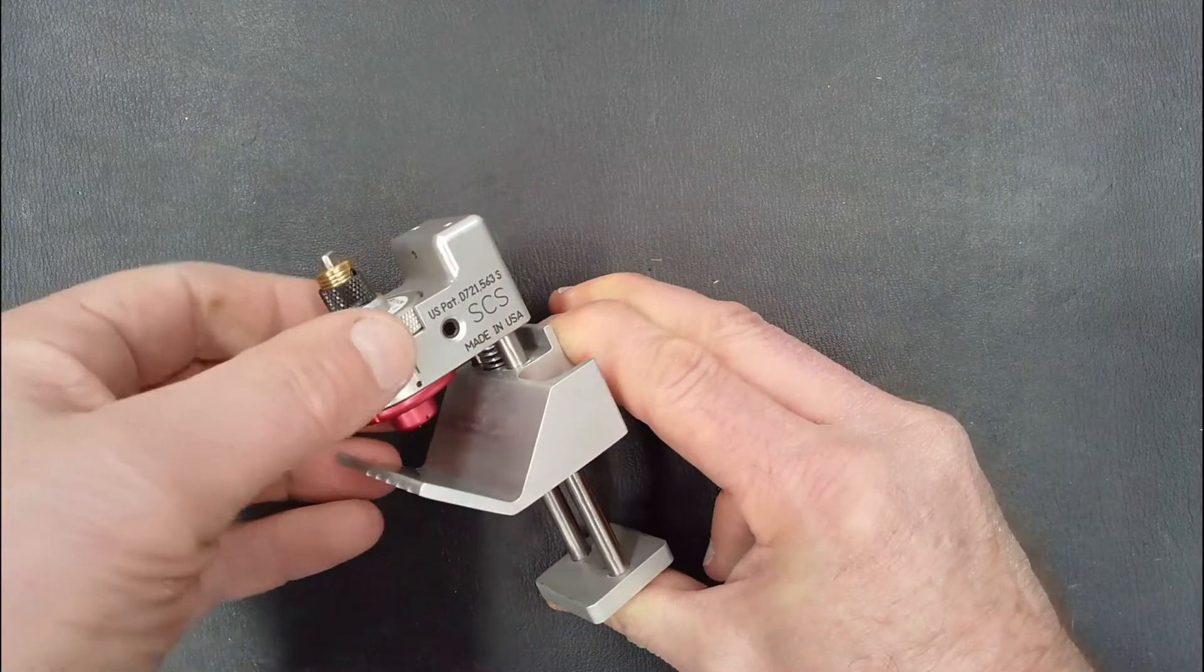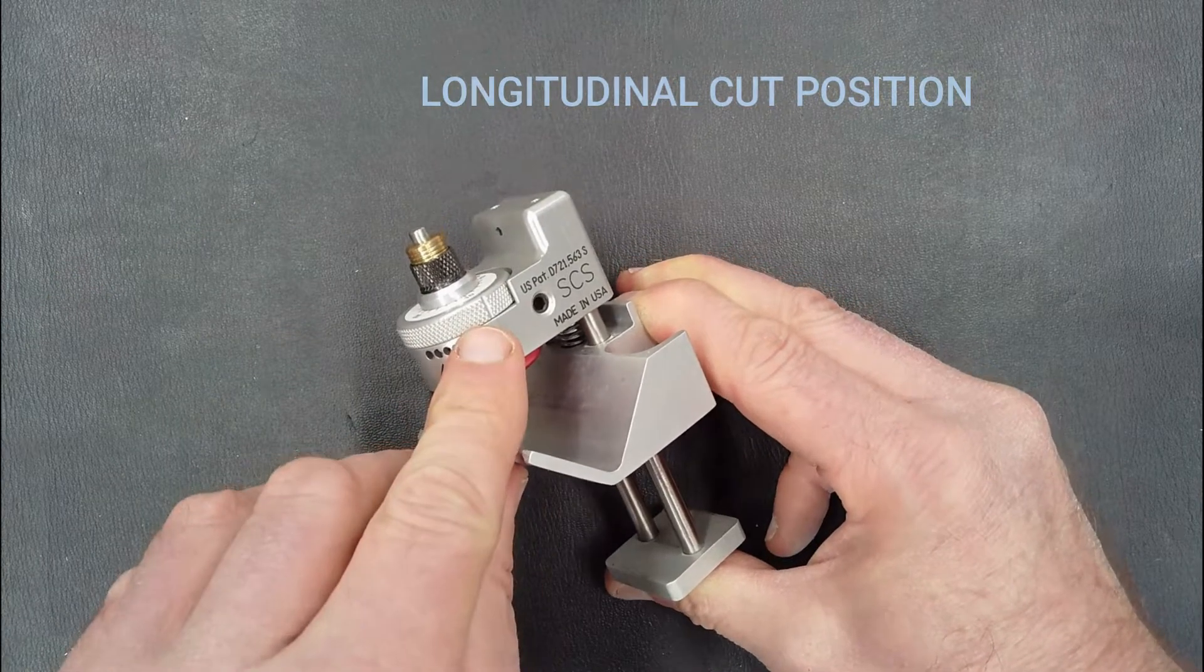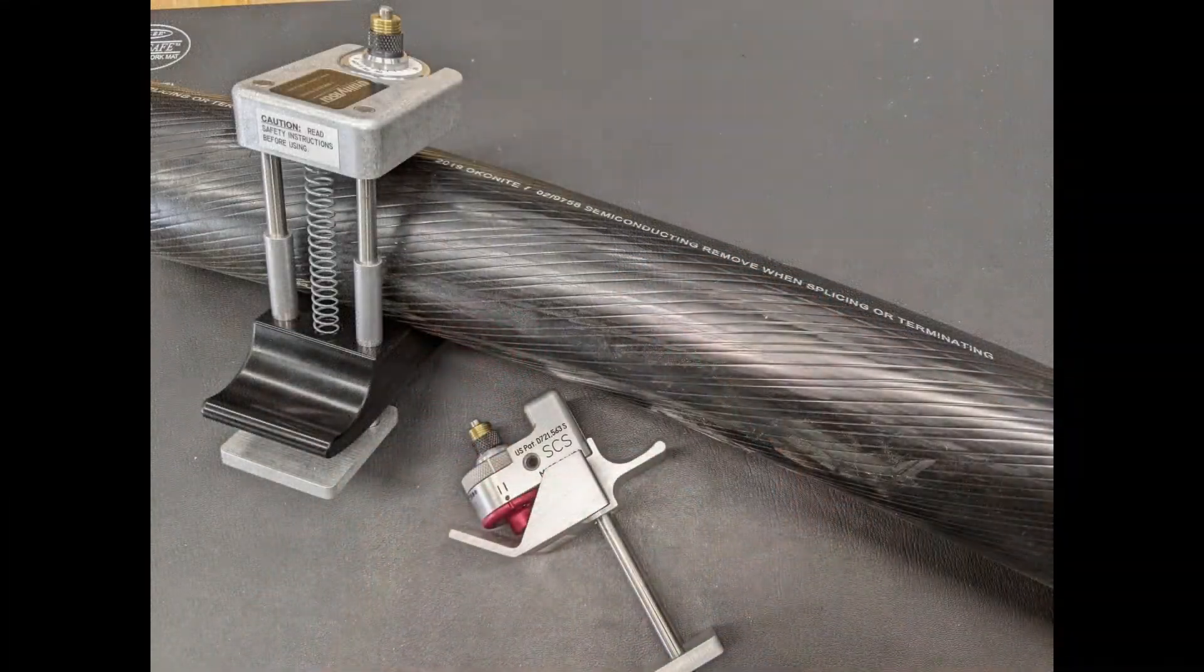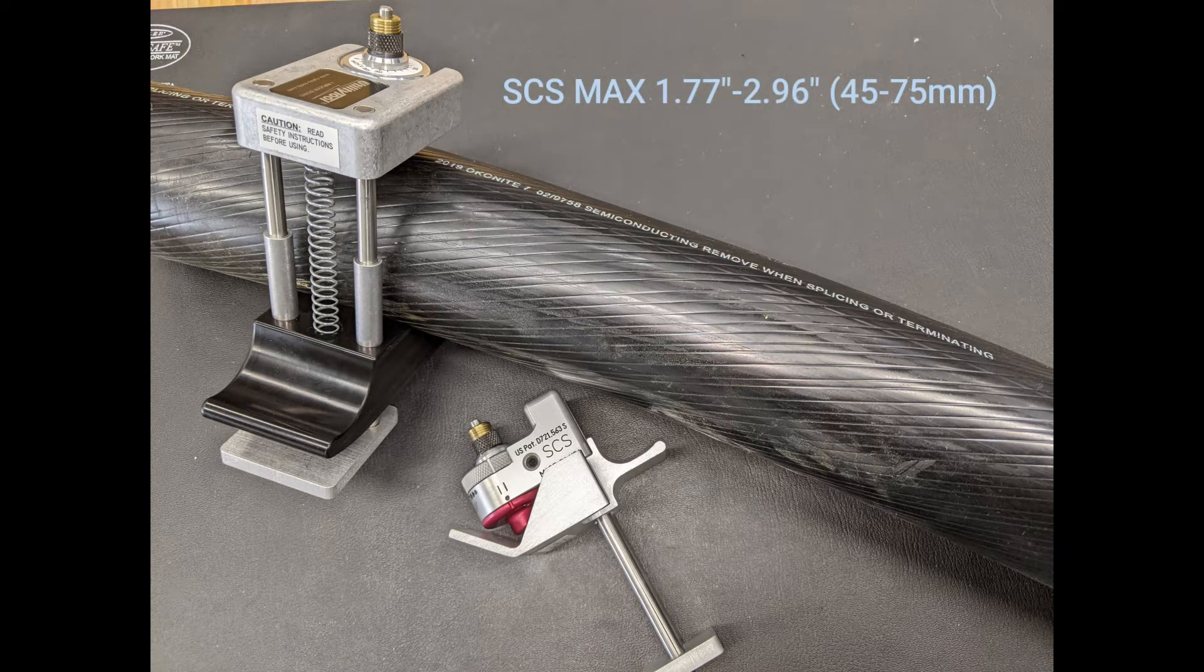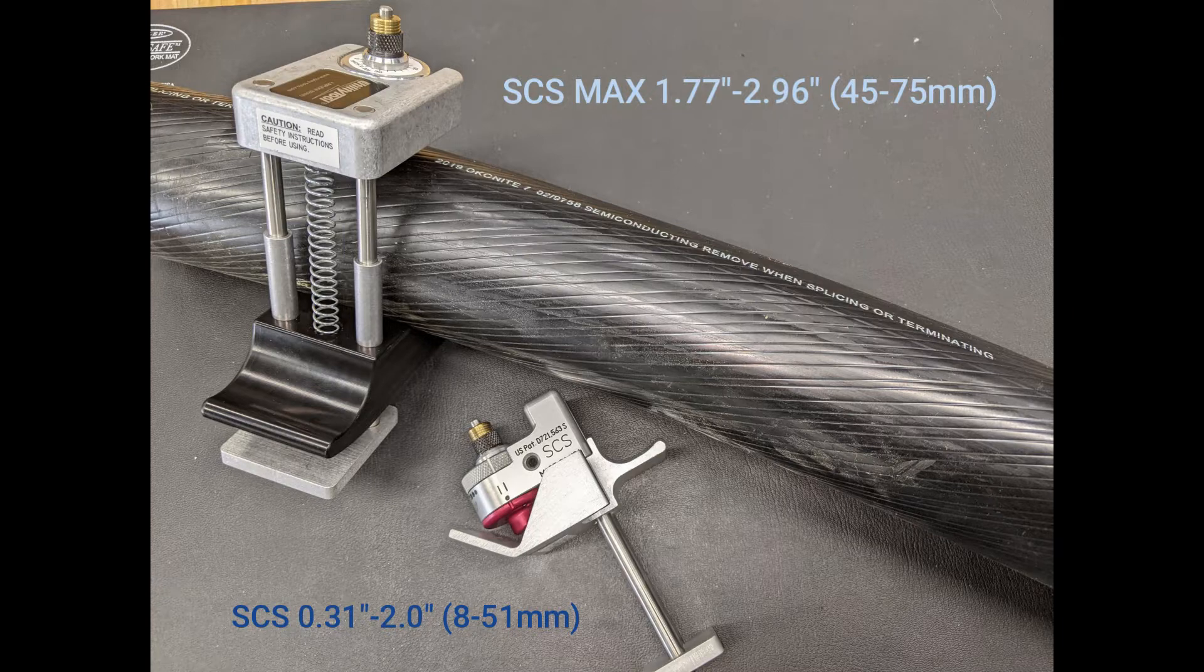It also has a longitudinal cut position. We also offer the SCS Max to expand the size range of the SCS platform. It has a maximum cable size of 2.96 inches or 75 millimeters, expanding the full range of the SCS.